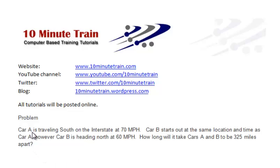We've got car A is traveling south on the interstate at 70 miles per hour. Car B starts out at the same location and time as car A. However, car B is heading in the opposite direction. It's heading north at 60 miles per hour. How long will it take cars A and B to be 325 miles apart on the interstate?